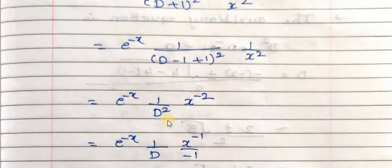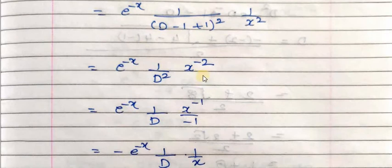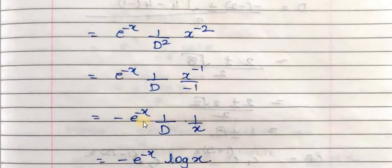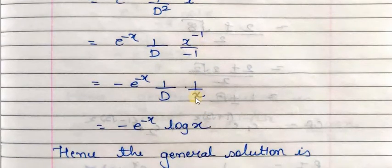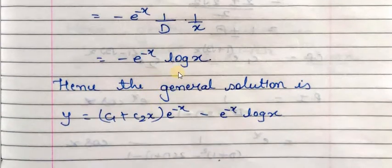One over D² means double integration of x raised to -2. Integrating once: integration of x^(-2) gives x^(-1) over -1, so we get minus e raised to -x times one over D times x^(-1), which is 1/x. Now we integrate 1/x with respect to x, giving log x. So this gives minus e raised to -x into log x.